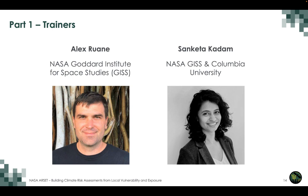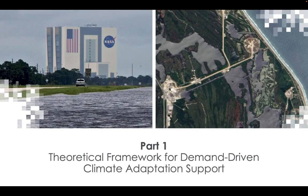Alex's research uses a variety of climate and impacts assessment models to examine the influence of climate variability and change on sectors including agriculture, water resources, urban areas, infrastructure, energy, and human health, leading to the development of adaptation strategies and decision support tools for stakeholders and policymakers. Sanketa is a PhD student in the Department of Earth and Environmental Sciences at Columbia University, and also part of the research staff at NASA Goddard Institute for Space Studies with the Climate Impacts Group. We are delighted to have them as guest trainers to discuss the theoretical framework for demand-driven climate adaptation support. Alex, over to you.